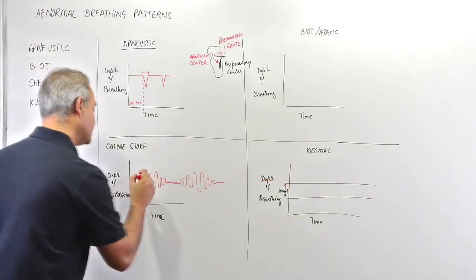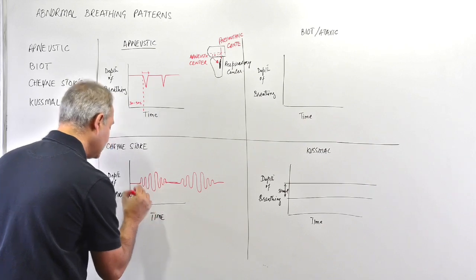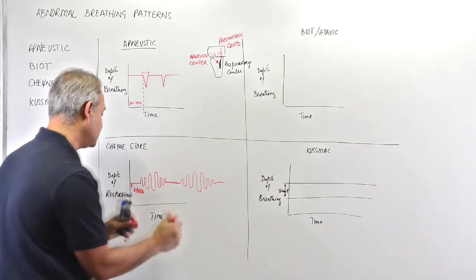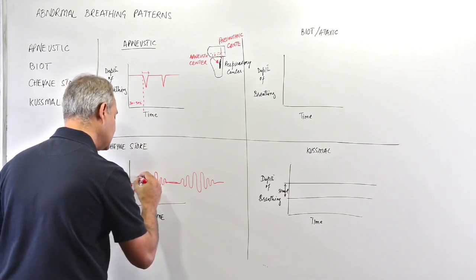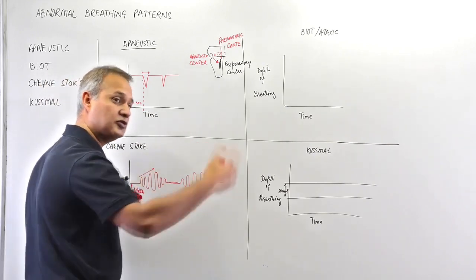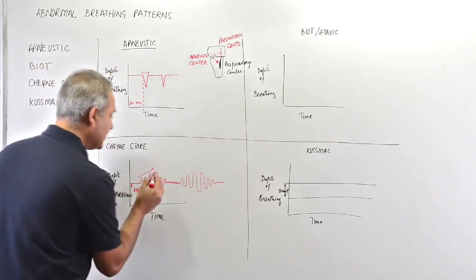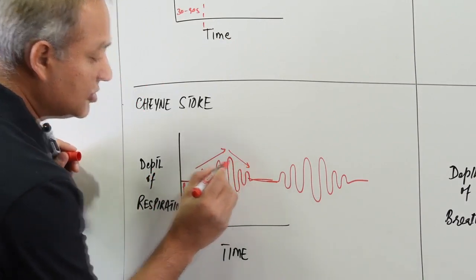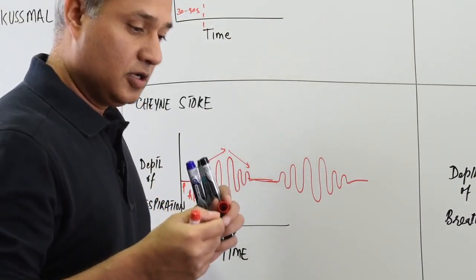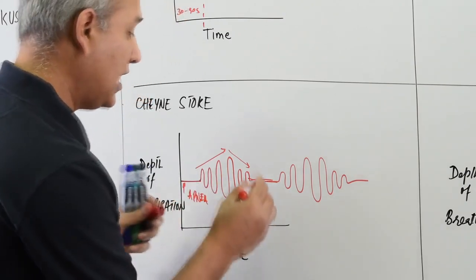So this is what it is: there is apnea - no breathing - and you're wondering, oh man, this person is not breathing. Then all of a sudden the breathing starts and the tidal volume, the depth of breathing, continues increasing like this. Then the depth of breathing starts reducing and then stops - apnea again.